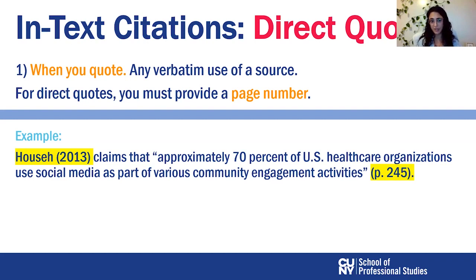I use the author's name as a word and put the year in parentheses, then continue my sentence: claims that approximately 70% of US healthcare organizations use social media as part of various community engagement activities, end quote. These words in quotation marks are the exact words from the source. I end by putting the page number, marking 'p.' space and then the page number, here it's 245.